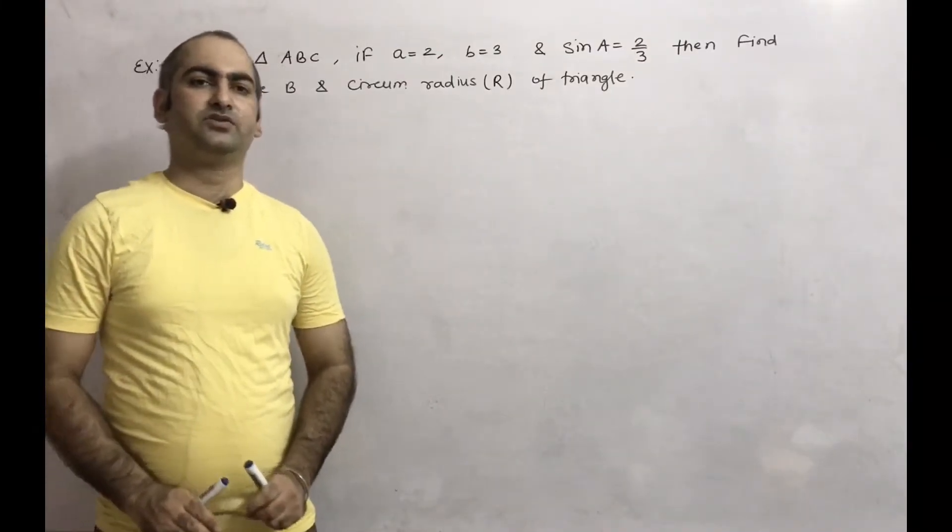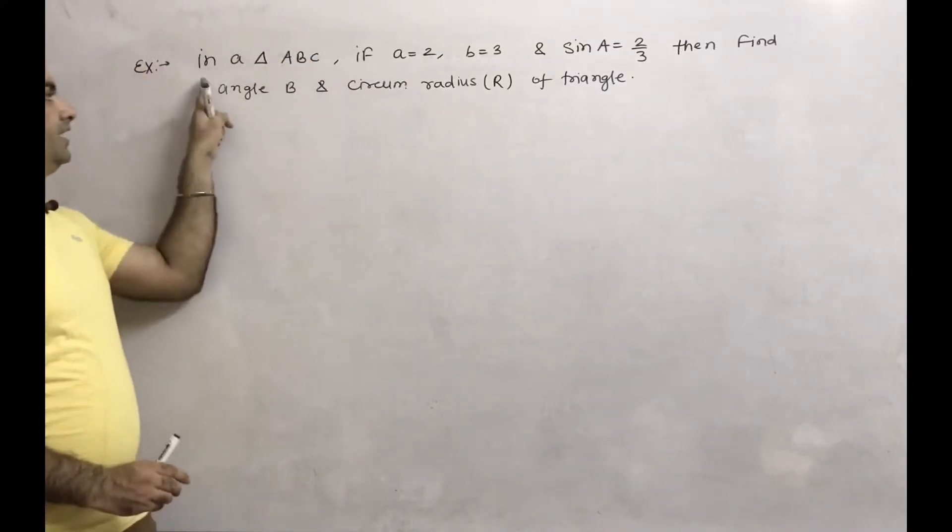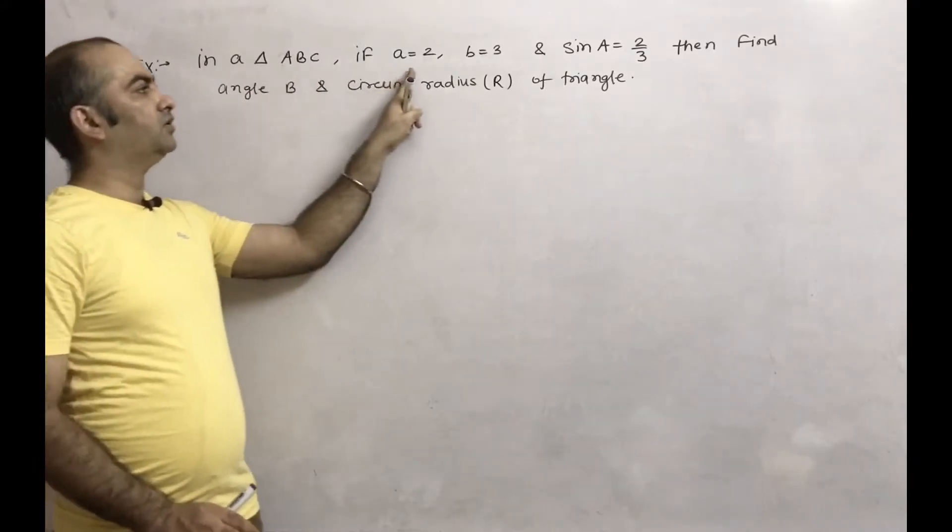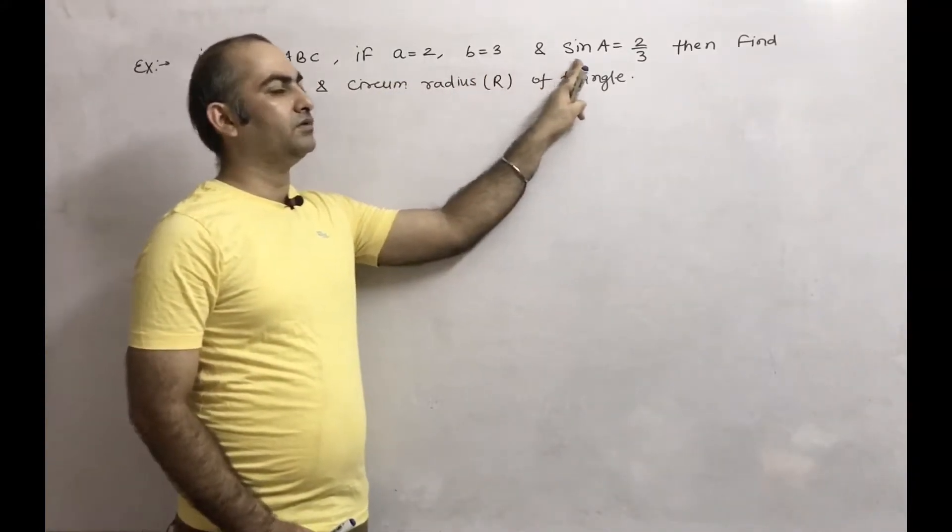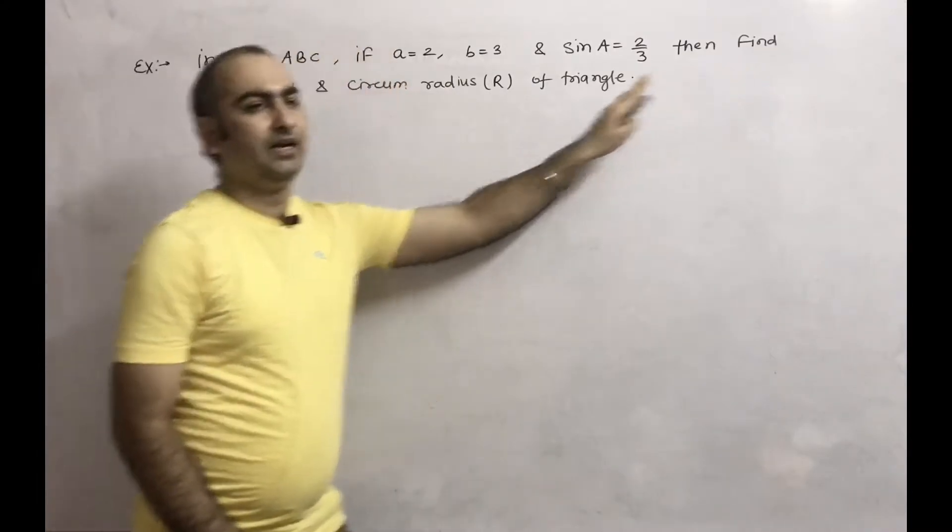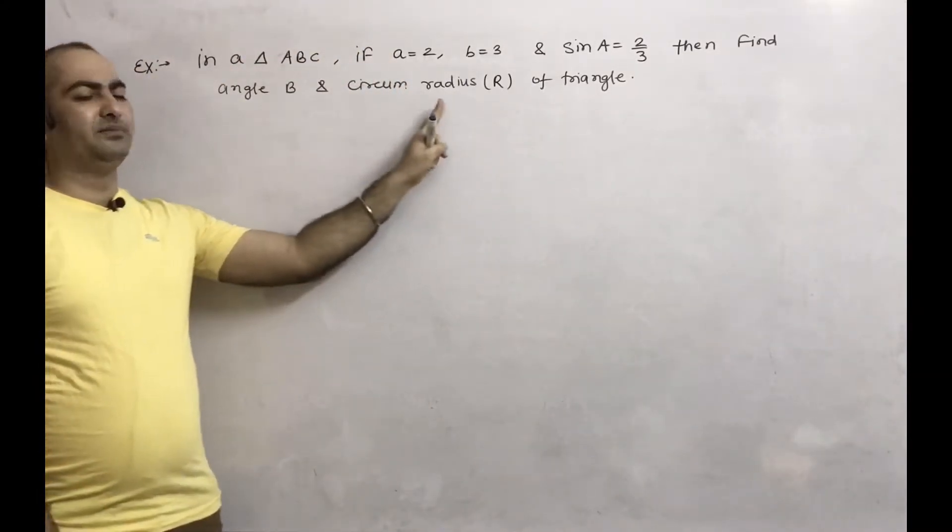Next we are discussing problems based on sine rule. The problem is: In triangle ABC, if a equals 2, b equals 3, and sine A equals 2/3, then find angle B and circumradius R of the triangle.